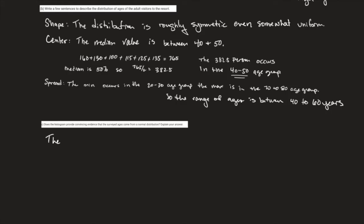That's part B. Remember, shape, center, spread. In order to get full marks on part B, you had to talk about shape, center, and spread, and you had to talk about it in context.